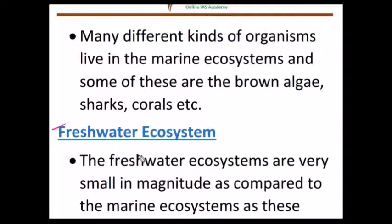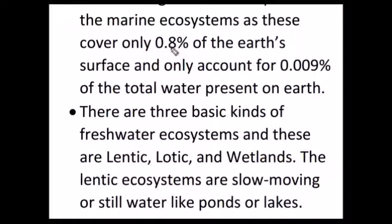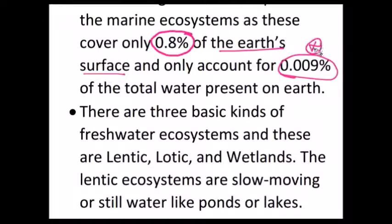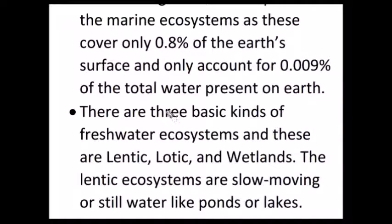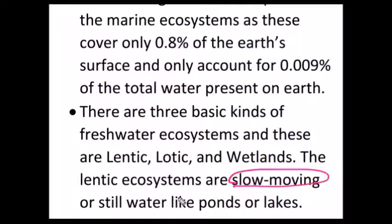Now let's discuss about freshwater ecosystem. Freshwater ecosystem is very small compared to the marine ecosystem. Freshwater ecosystem covers only 0.8% of the earth's surface, and out of the total water available on the earth, freshwater accounts for 0.009%. So remember: out of total water present, 97% is in the ocean, and available freshwater on the land is about 0.009%. There are three basic types of freshwater ecosystems: one is lentic, second is lotic, and third is wetland.